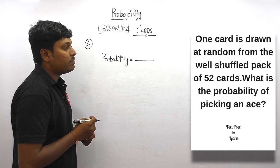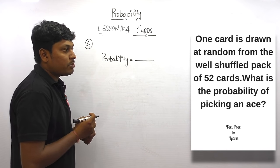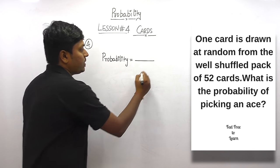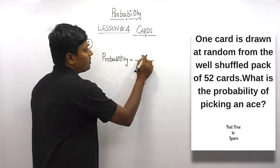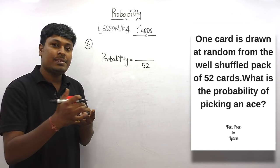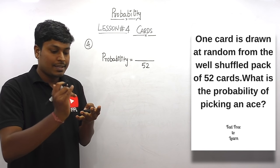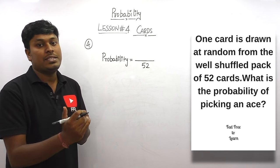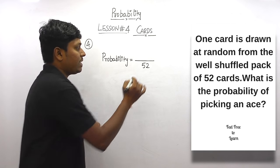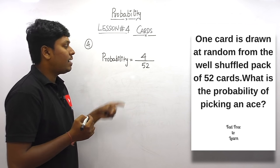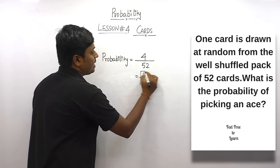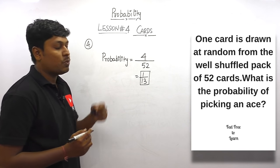Question number four: one card is drawn at random from a well-shuffled pack of 52 cards. What is the probability of picking an ace? Total possibility is 52. There are four different shapes and each has one ace — so diamond, heart, club, and spade each have one ace, giving 4 aces total. So 4 divided by 52 = 1/13.